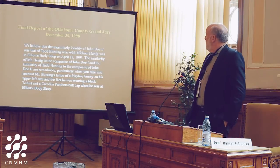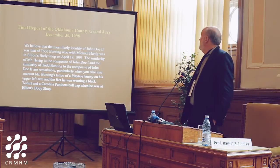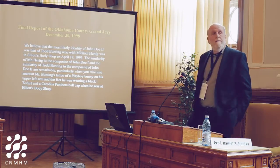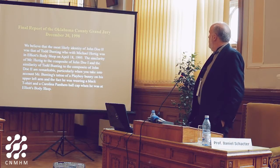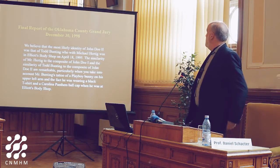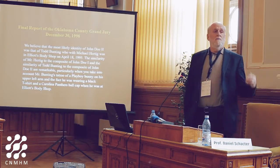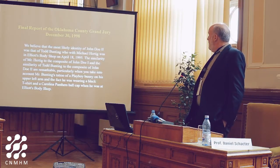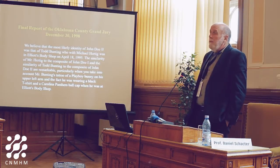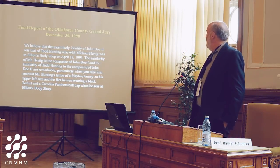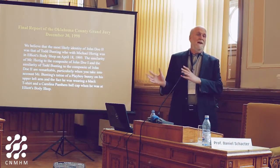The Oklahoma County Grand Jury concluded: 'We believe that the most likely identity of John Doe No. 2 was that of Todd Bunting,' an innocent private in the U.S. Army who was at Elliott's Body Shop on April 19, 1995 — the day after McVeigh was there. The witness Tom Kessinger had correctly remembered details like Bunting's Playboy bunny tattoo on his upper left arm and his black t-shirt and Carolina Panthers ball cap, but Bunting wasn't there with McVeigh.